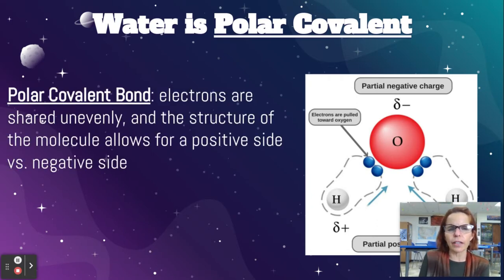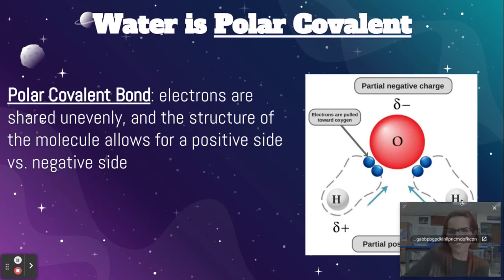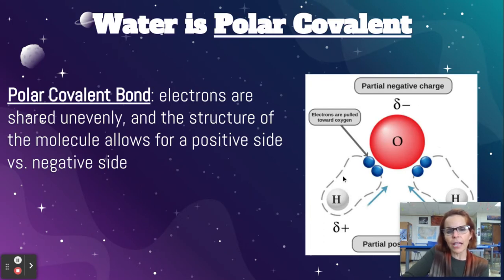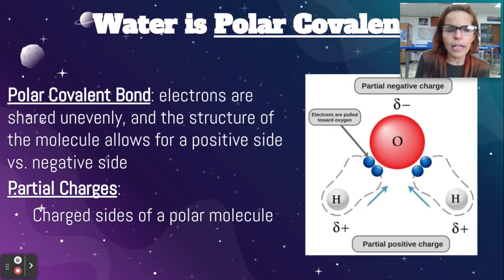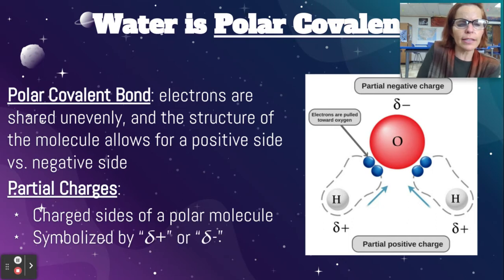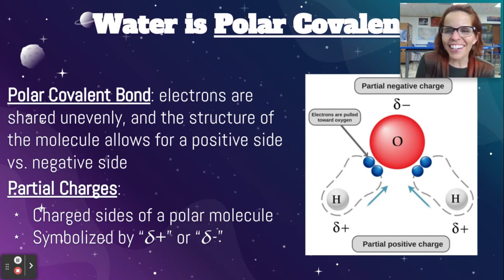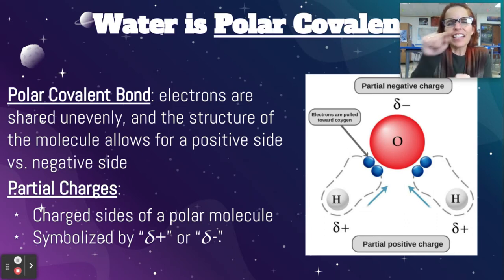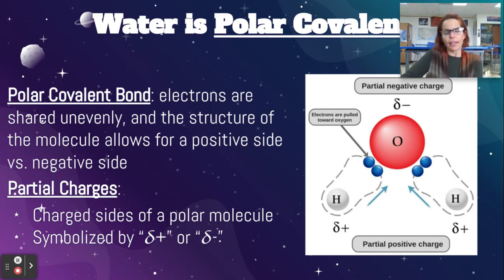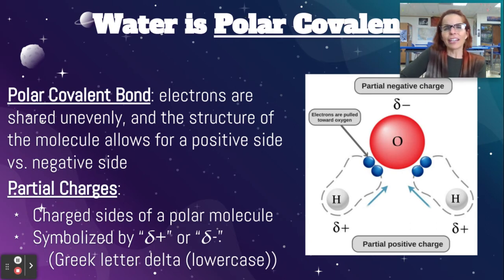Water isn't just covalent — water is polar covalent. In a polar covalent bond, the electrons are shared unevenly, and the structure of the molecule allows for a positive side and a negative side. Here's the negative side of the water molecule, and over here are the positive sides. Partial charges in a polar covalent molecule are designated with the lowercase delta — delta plus and delta minus. The oxygen gets a partial minus because it's hogging the electrons more than 50% of the time, giving it a partial negative charge, and each of the hydrogens have a partial positive charge.